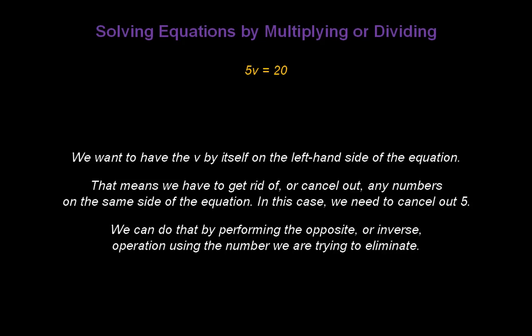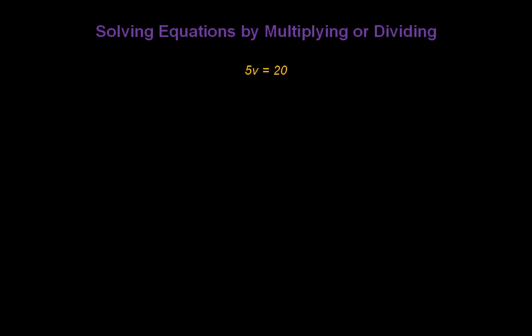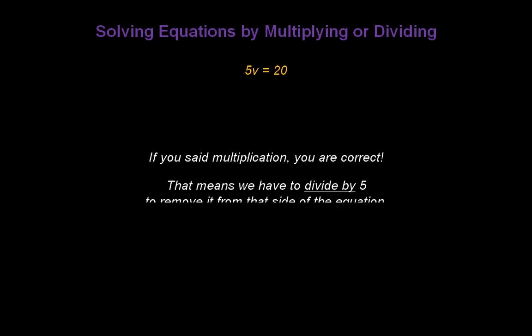We can do that by performing the opposite or inverse operation using the number we're trying to eliminate. Now, take a look at the equation again. What operation is being performed between the 5 and v? If you said multiplication, you're correct. We have 5 times v. That means we have to divide by 5 to remove it from that side of the equation. So let's go ahead and write divide by 5 under the left-hand side.